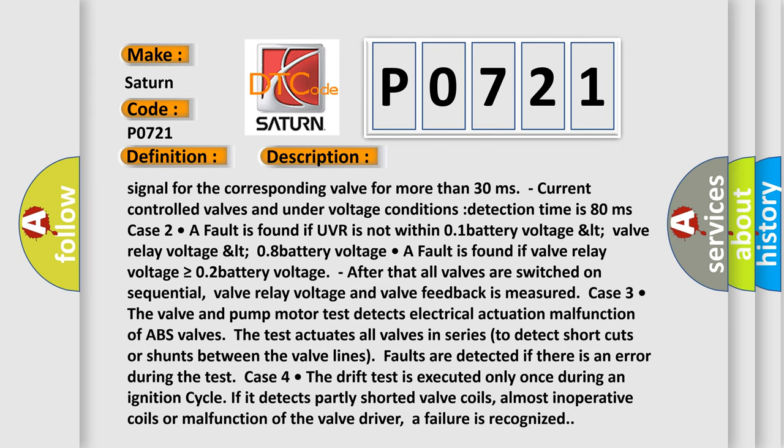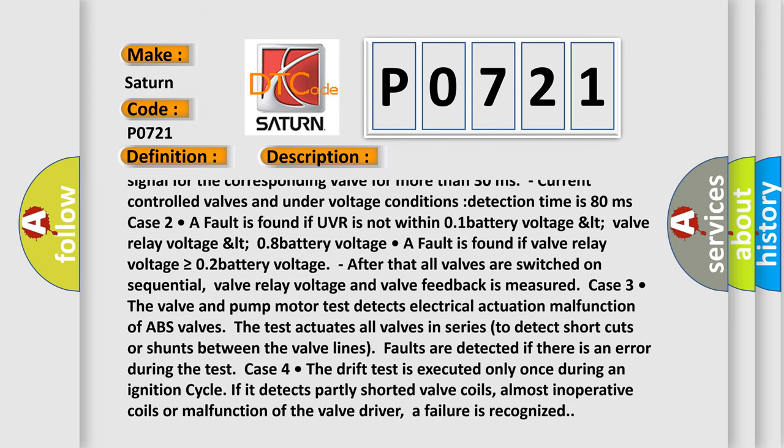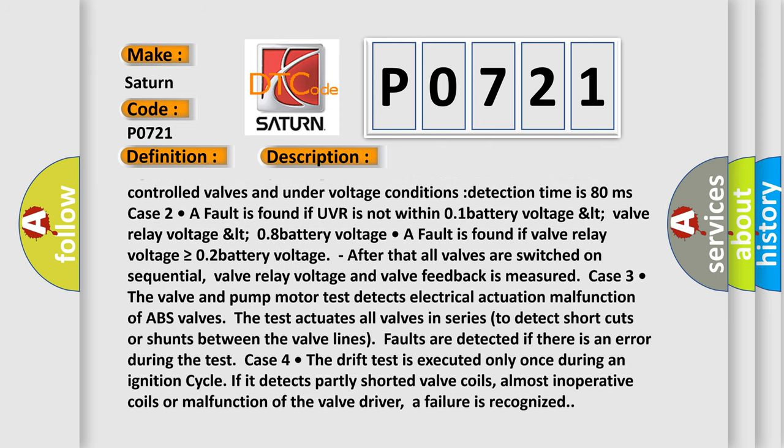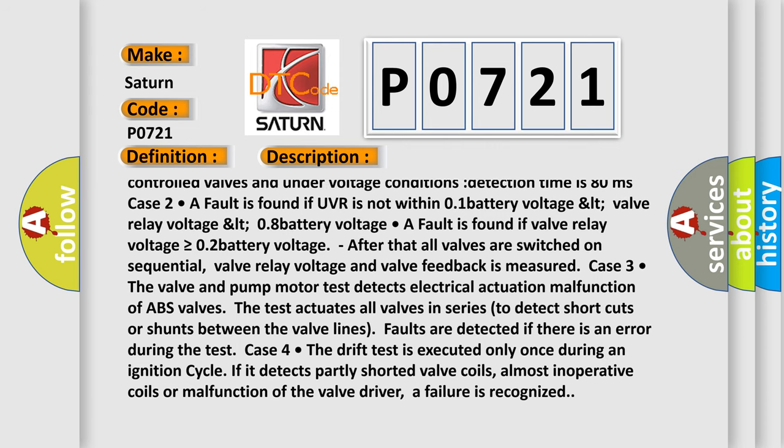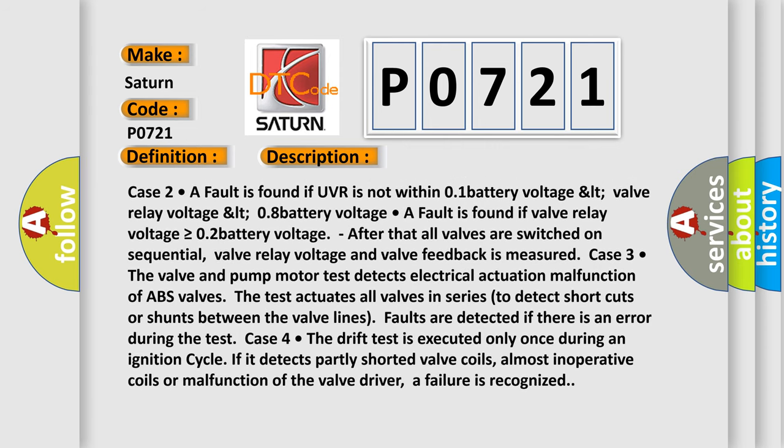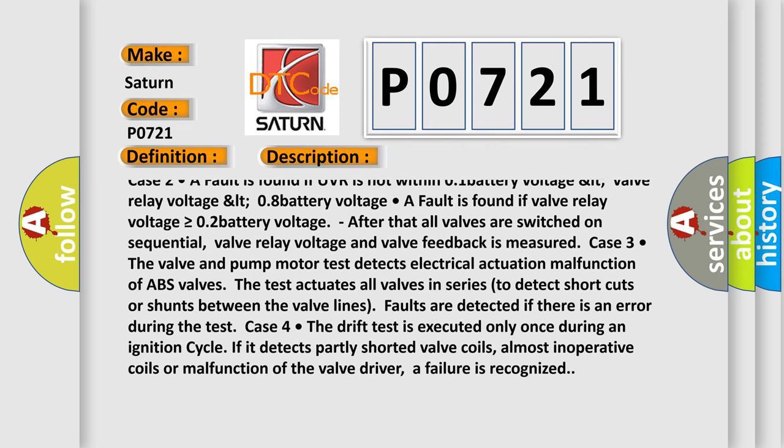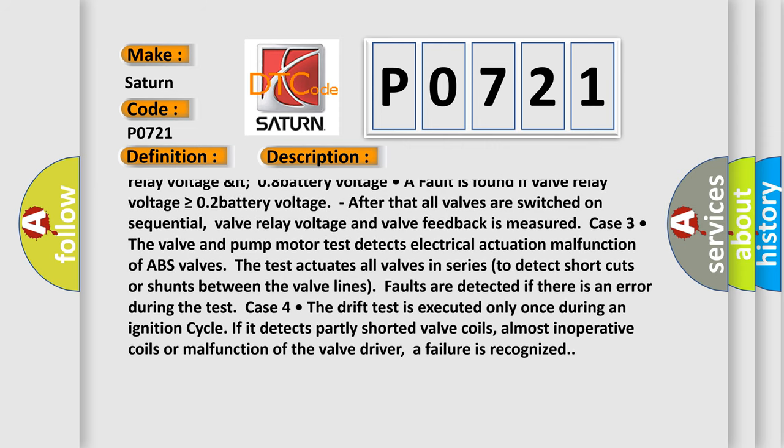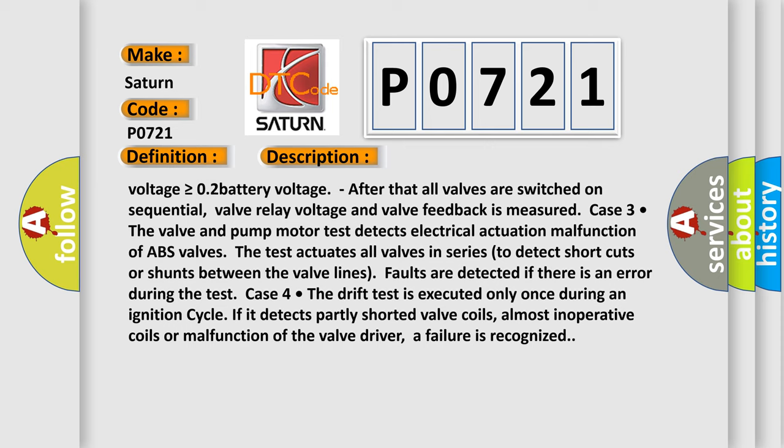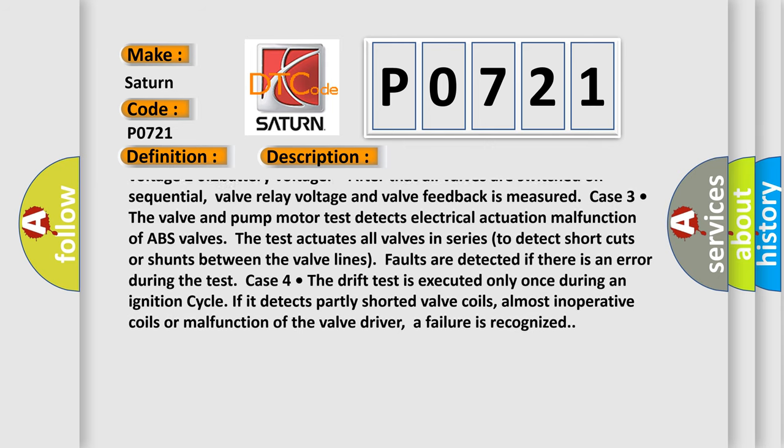Valve relay voltage less than 0.8 battery voltage. A fault is found if valve relay voltage is greater than or equal to 0.2 battery voltage. After that, all valves are switched on sequentially, valve relay voltage and valve feedback is measured. Case 3: The valve and pump motor test detects electrical actuation malfunction of ABS valves.